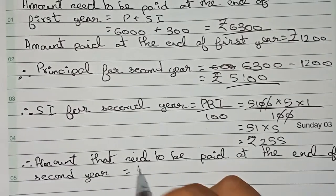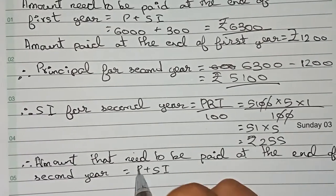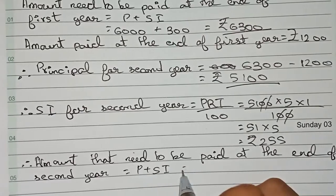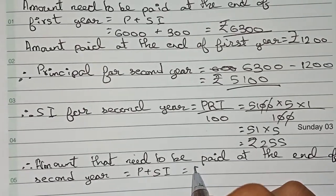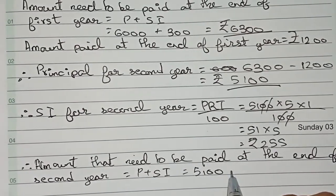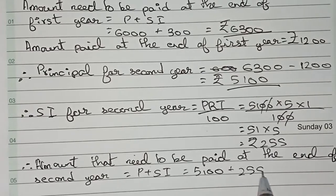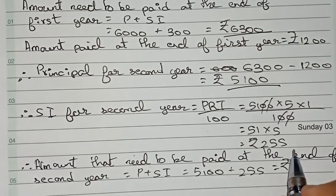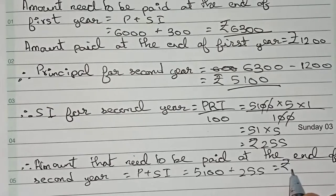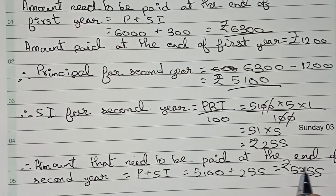The amount that needs to be paid at the end of the second year equals Principal + SI, which is 5100 + 255, giving us rupees 5355.